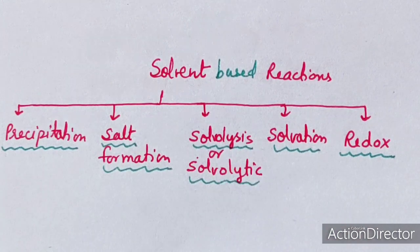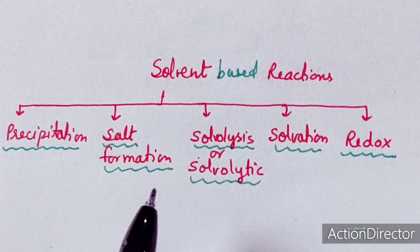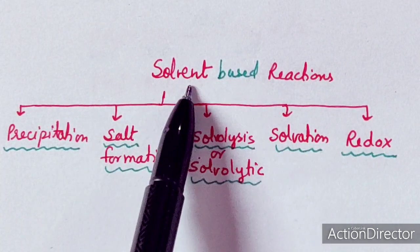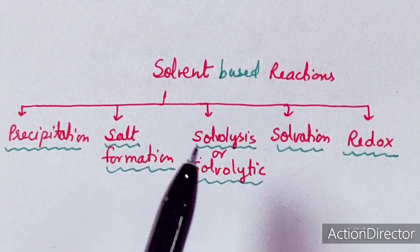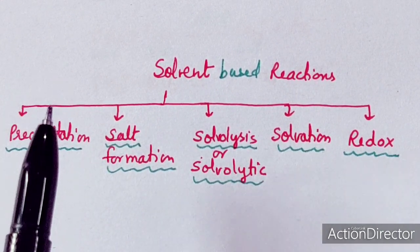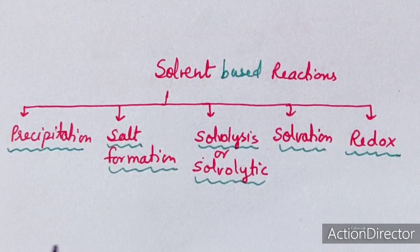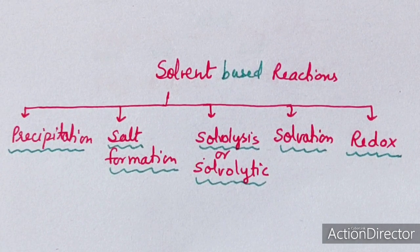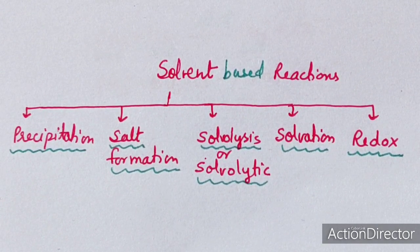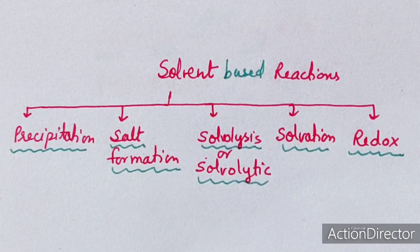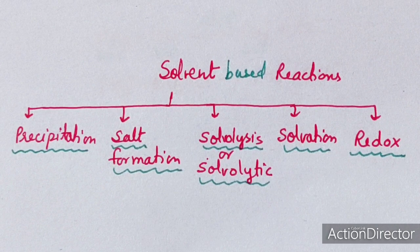There are five types of reactions which depend upon the nature of solvents. If we use solvents as aqueous solvents, it becomes easy to discuss the reactions of liquid ammonia and liquid sulfur dioxide. By looking at these reactions, we can understand non-aqueous solvents.